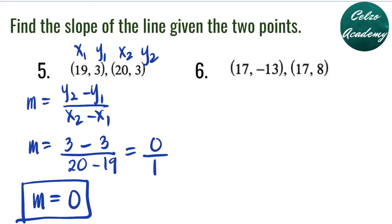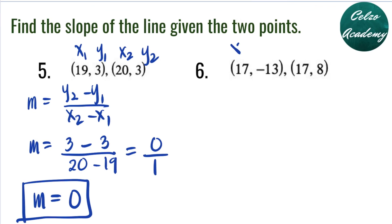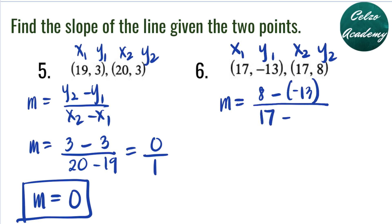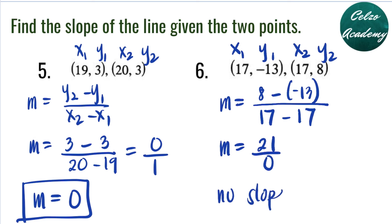Question 6: points (17, -13) and (17, 8). Our first pair is x1, y1; second pair is x2, y2. Plugging in: y2 is 8 minus y1 is negative 13, over x2 is 17 minus x1 is 17. Simplifying: 8 minus negative 13 is 8 plus 13, which is 21. And 17 minus 17 is 0. Notice the difference between 5 and 6: in number 5, the numerator is 0 so the answer is 0. In number 6, the denominator is 0, which means the slope is undefined — you cannot divide a number by 0.